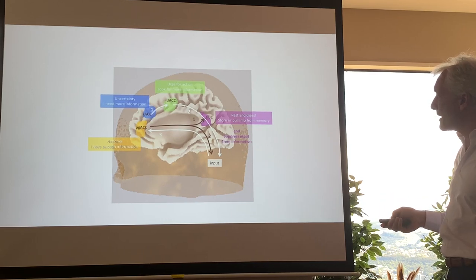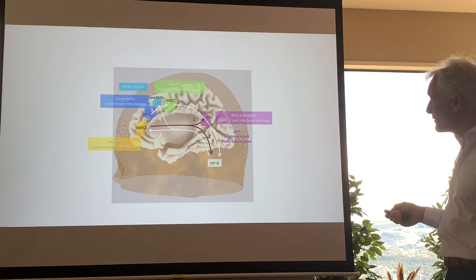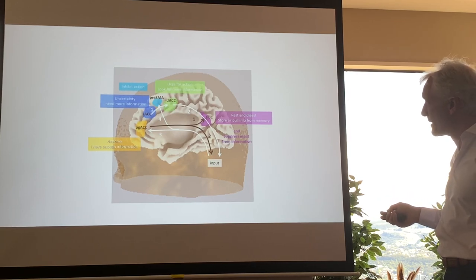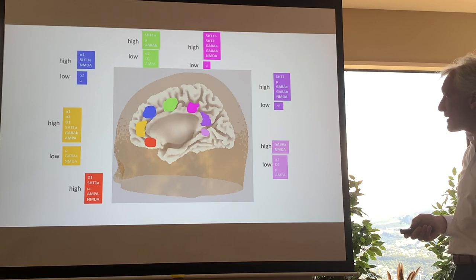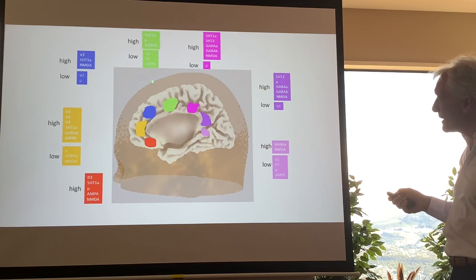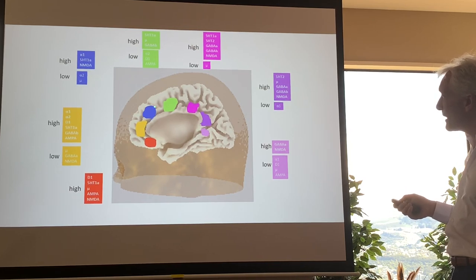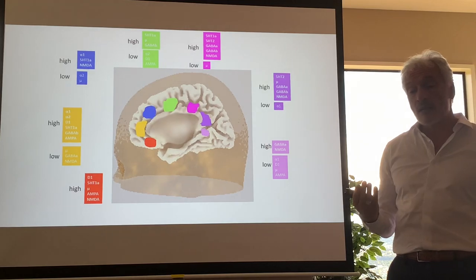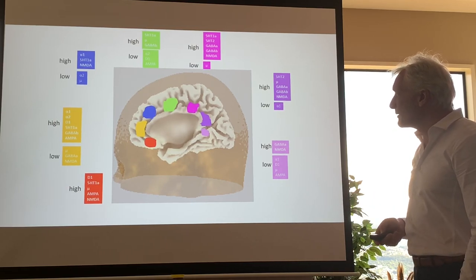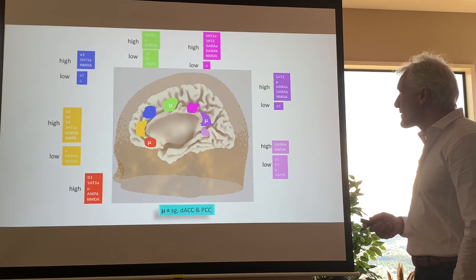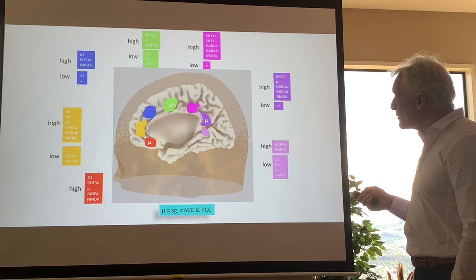If you cannot get enough information, you enter a vicious circle that ultimately generates stress. If there is enough information, it activates the pre-SMA to inhibit further activity. Different parts of the anterior and posterior cingulate have different receptor profiles, which allows the cingulate cortex to have its different functions. Simply talking about 'the anterior cingulate cortex' without specifying the subdivision does not make sense.